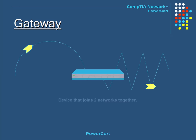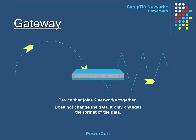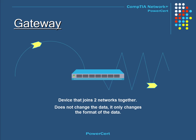A gateway can be defined as a device that joins two networks together. Gateways interconnect networks with different or incompatible communication protocols. A gateway does not change the data — it only changes the format of the data. This illustration shows how a gateway transforms a simple signal into something different: the circular pattern represents one network, and as it passes through the gateway, it transforms into a wave pattern representing a different network.